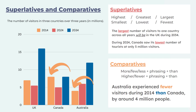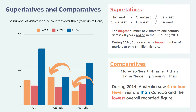We can actually flip this structure and change it while comparing the same data: 'During 2014, Australia saw 4 million fewer visitors than Canada and the lowest overall recorded figure.' Here I've even added a superlative, which gives extra detail and information — showing overall fluency ability.